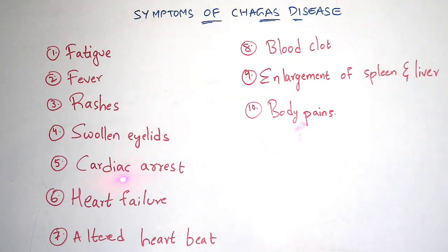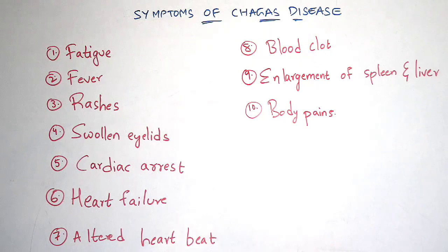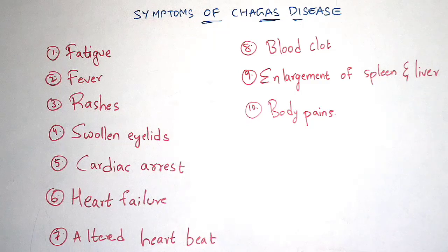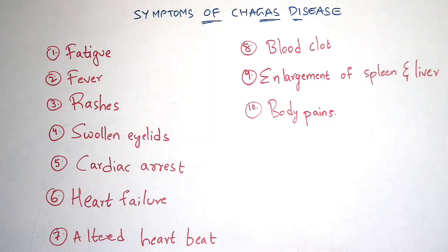When the blood gets clotted, the heart cannot pump the blood properly — because as the blood becomes thick, pumping is impaired. This leads to cardiac arrest and heart failure, which are the fifth and sixth symptoms. Due to blood clot, there is no pumping of blood by the heart, resulting in cardiac arrest and heart failure.